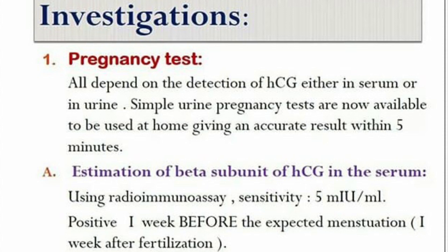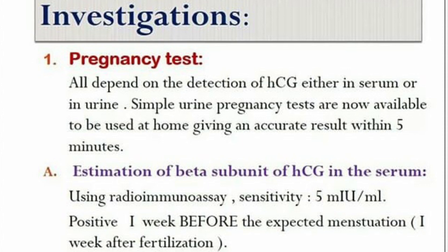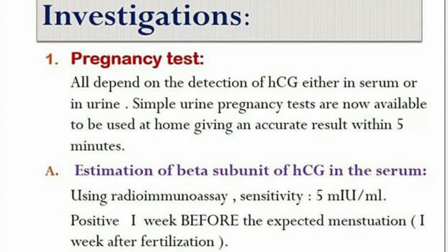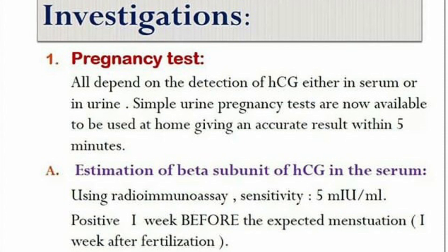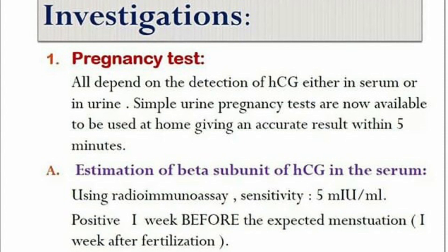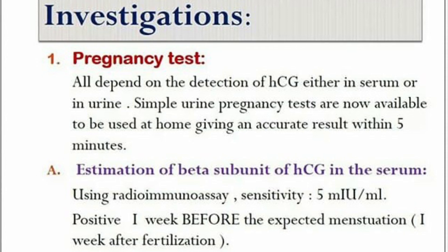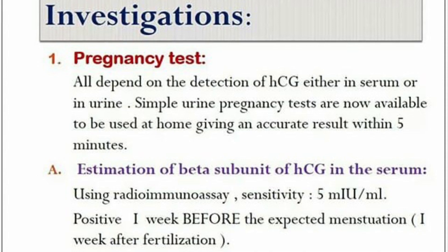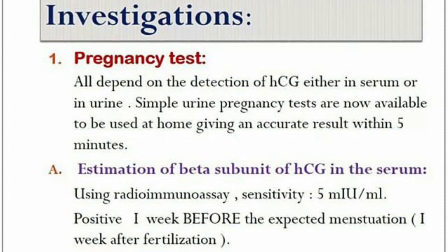An important pregnancy test is the estimation of the beta subunit of HCG in the serum, done using radioimmunoassay with a sensitivity of 5 milli-international units per milliliter. It gives a positive result one week before the expected menstruation, which is basically one week after fertilization. Non-pregnant females have a result of less than 3 milli-international units per milliliter. This assay may be significantly impacted by high-dose biotin taken within the previous 12 hours.